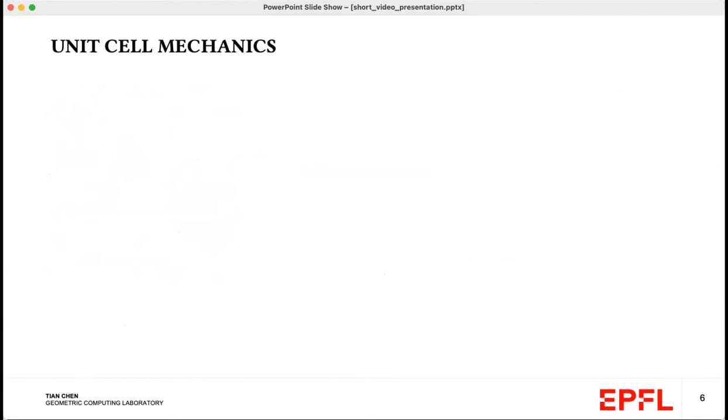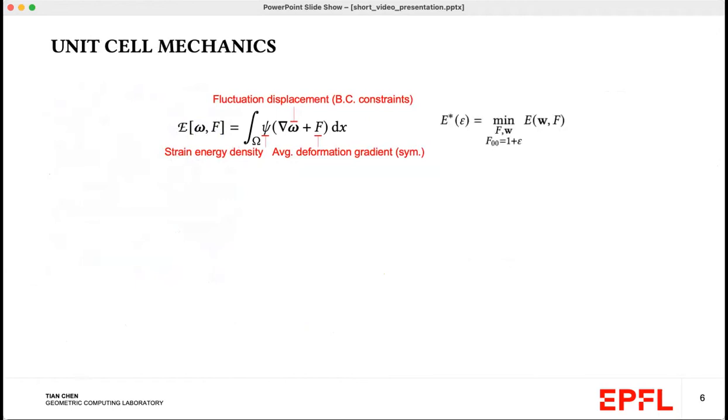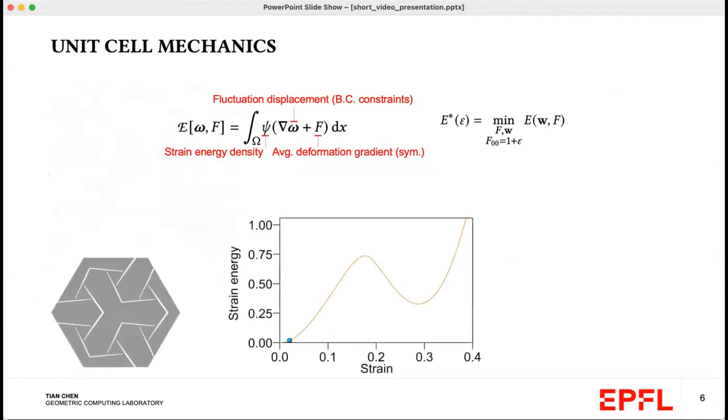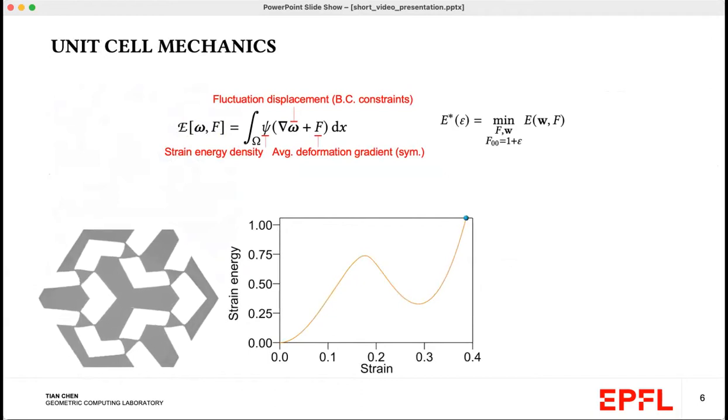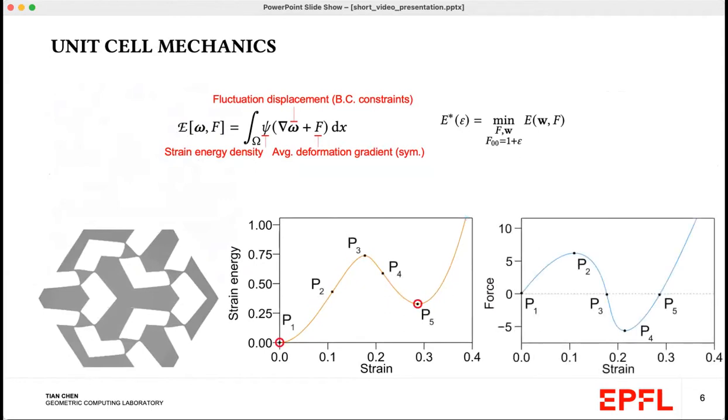We use mechanics to study the opening behavior of the unit cell. Using FEM in conjunction with periodic boundary conditions, we're able to incrementally increase the stretch and obtain the corresponding strain energy. This is an example of one of the opening sequences. In the strain energy landscape, we clearly see that there are two local minima, and these correspond to the equilibrium states. If we differentiate this curve, we obtain the force versus strain curve along with the critical points.